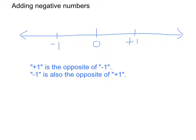Before we move on to the addition of negative numbers, there is a very important point to remind you. If you look at this number line, we can see that zero is in the middle. Positive one is one unit to the right of zero, and negative one is one unit to the left of zero. Therefore, positive one is called the opposite of negative one.